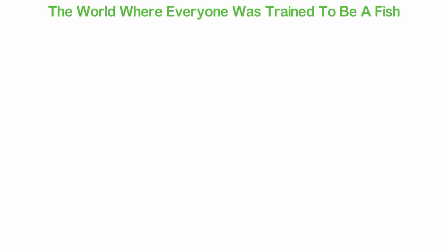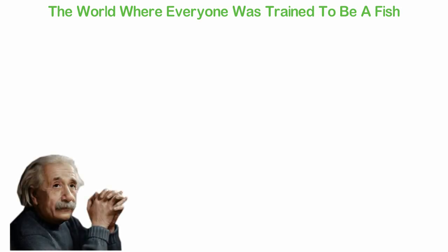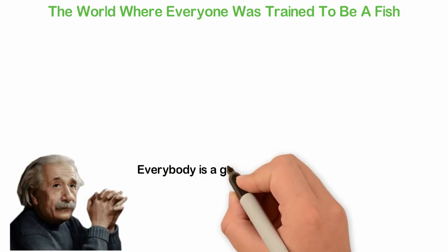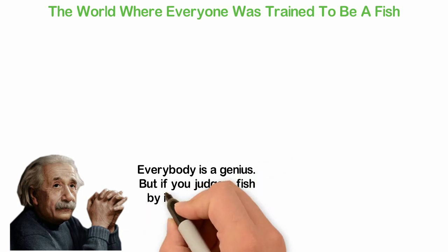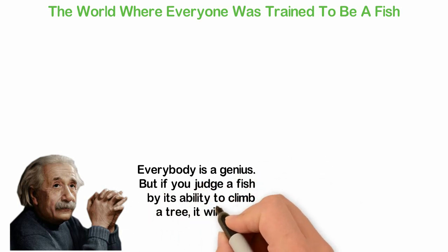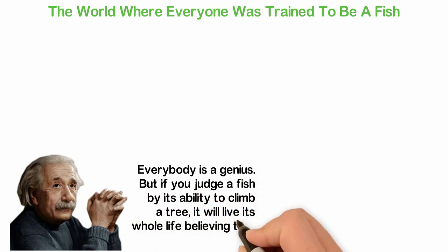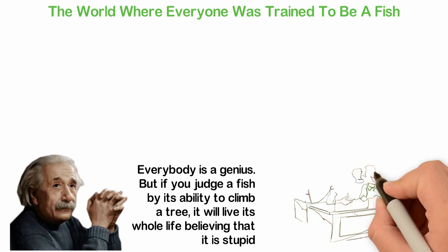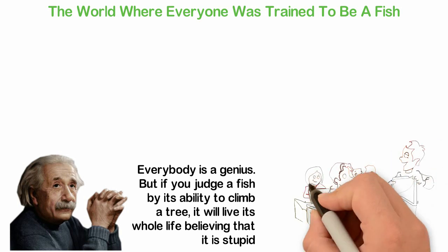The world where everyone was trained to be a fish. Albert Einstein once wrote, everybody is a genius but if you judge a fish by its ability to climb a tree, it will live its whole life believing that it is stupid. In other words, humans are created so differently. I'm different from you. You're very much different from me.